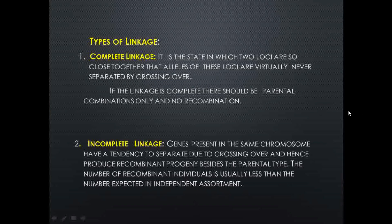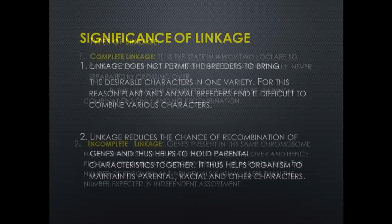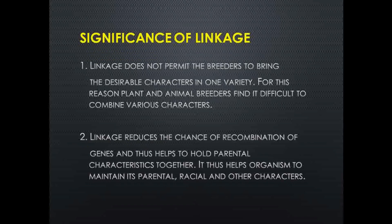To summarize: in complete linkage, genes are inherited as-is and remain together in the offspring with no recombination. In incomplete linkage, recombination does occur in the progeny. These are the two types of linkage.